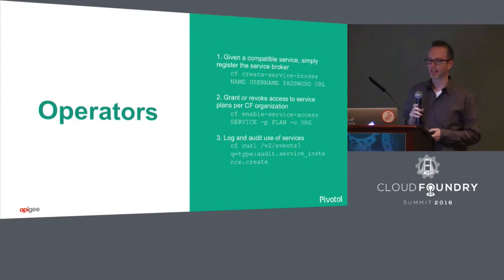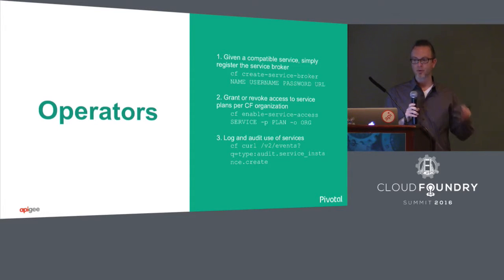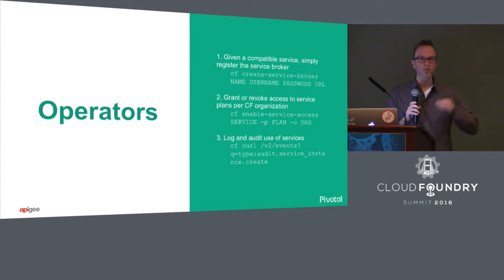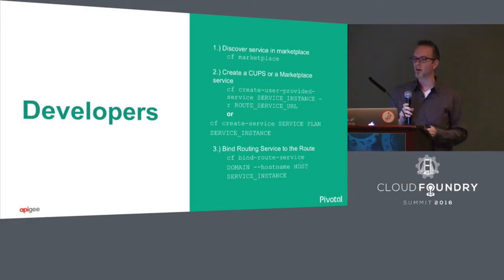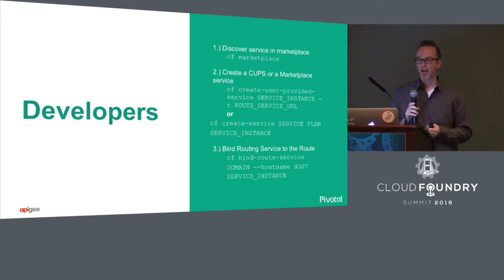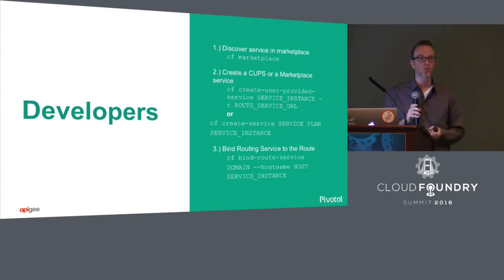For the operator experience, it's pretty straightforward — add something as a service broker, create the service plans. For API management, you could have a plan for authorization, a plan for caching, a plan for something else. As a developer, you're just binding your service to that particular route, and things are magically going to happen for everything in that request path. Once the operator sets this up, the developer is good to go: CF marketplace shows all your services — MySQL, Rabbit, Apigee — and you do create user-provided service, pass in the service you want to use and the route, then bind it. Done. Everything instantaneously hooks up.